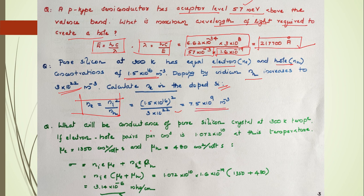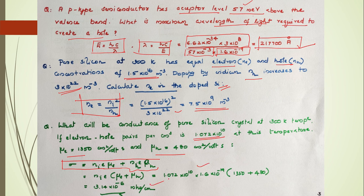Problem 3: What is the conductivity of a pure silicon crystal at 300 K if the electron-hole pair density is 1.072×10¹⁰ per cm³? Given the mobilities of electrons and holes, we use sigma = e·n_i·(μ_e + μ_h) since n_e = n_h for pure silicon. Substituting values gives the answer: 3.14×10⁻⁶.